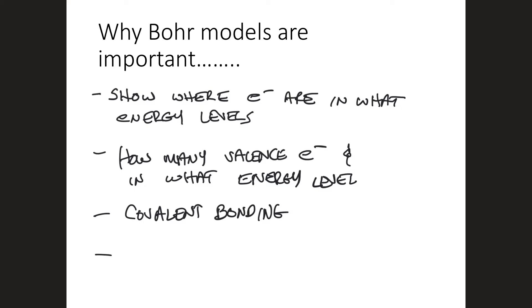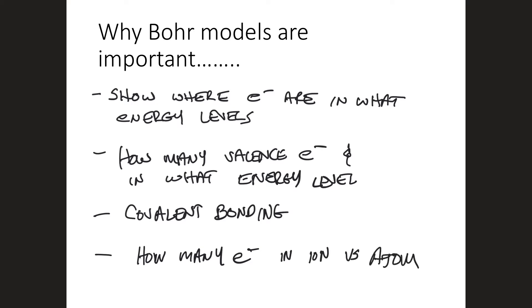The Bohr model also gives us a good understanding of how many electrons are in an ion versus an atom. And the last thing is that they're pretty easy to draw — not really complicated, kind of fun. So those are the reasons why we still use these: they show where electrons are in what energy levels, how many valence electrons, covalent bonding, and ions versus atoms.